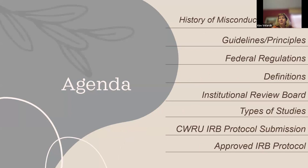We'll go through the guidelines and principles and then the definitions. There are a lot of words in the IRB world that mean different things. The Office for Human Research Protection governs all local IRBs, and many of their definitions differ from standard dictionary definitions. We'll go through different types of studies, especially the difference between quality improvement and research, which is something we see a lot with MSAS.